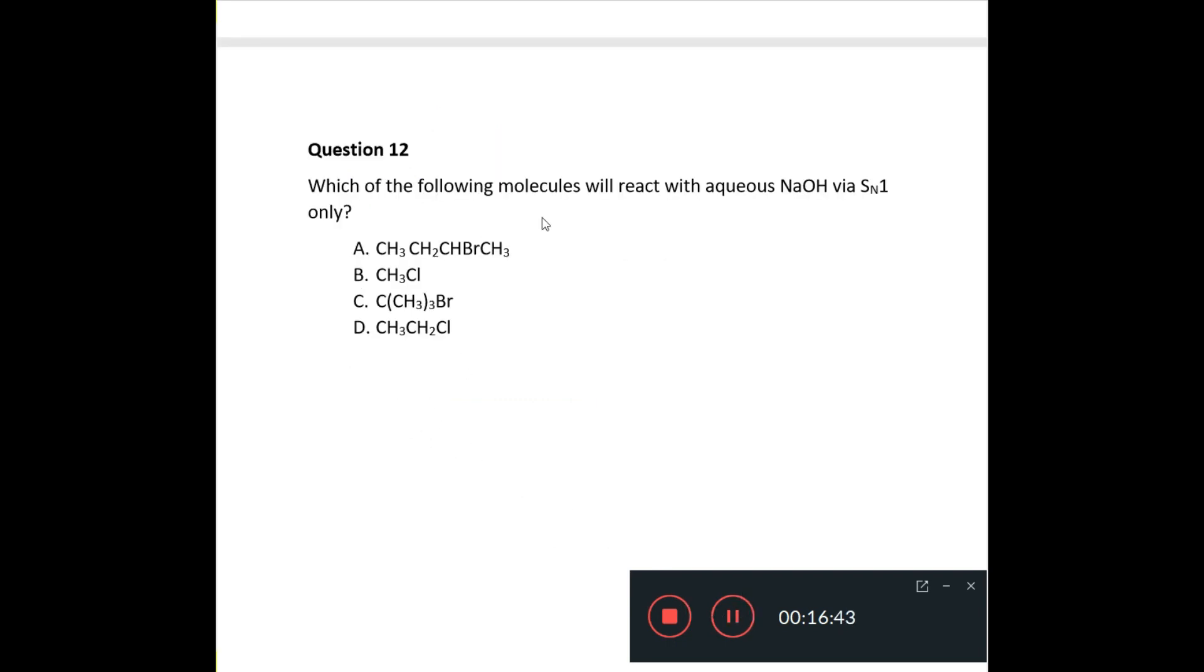Question 12 says, which of the following molecules will react with aqueous sodium hydroxide via SN1 only? Now, for SN1, what you need is that you need a tertiary halogen alkane. So, you're looking for a tertiary halogen alkane. And so, your answer is C.